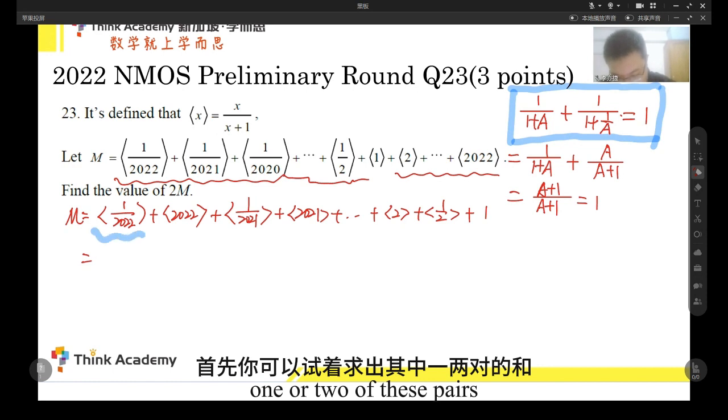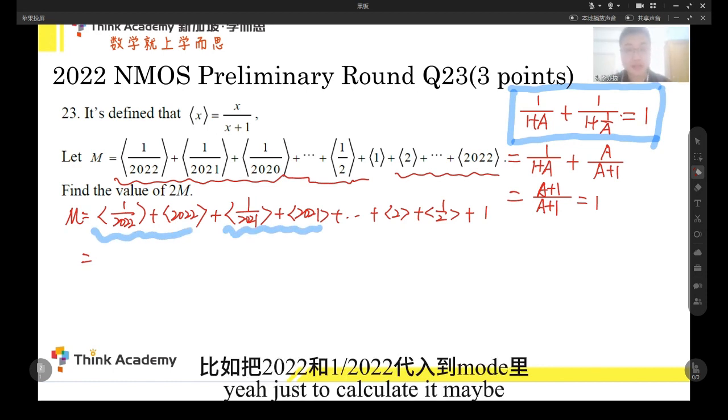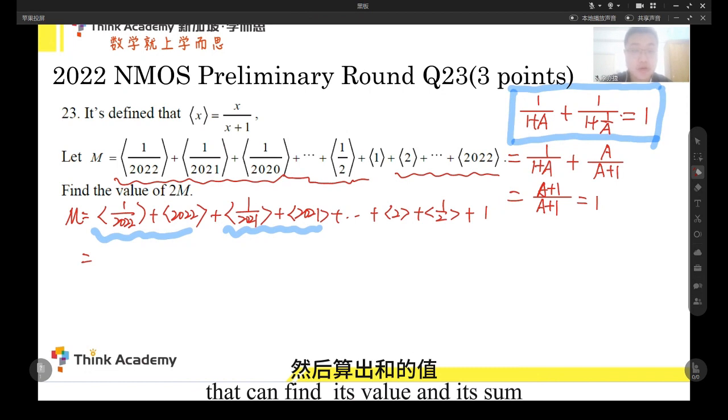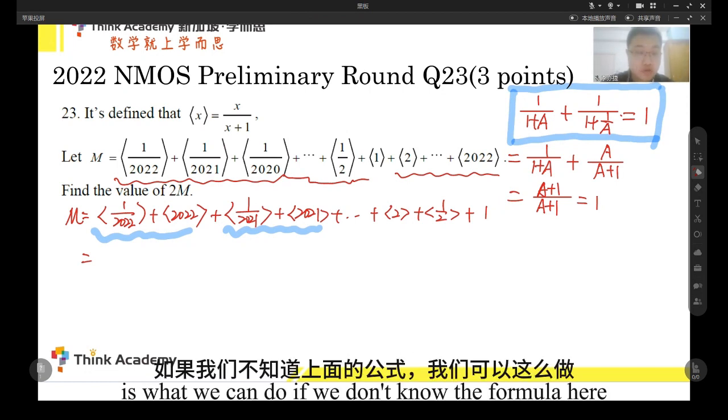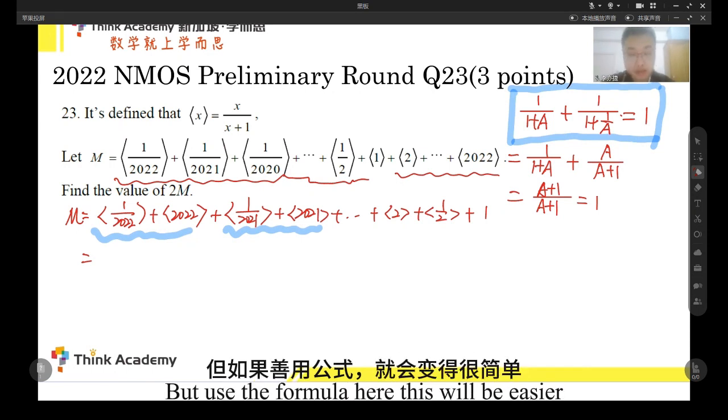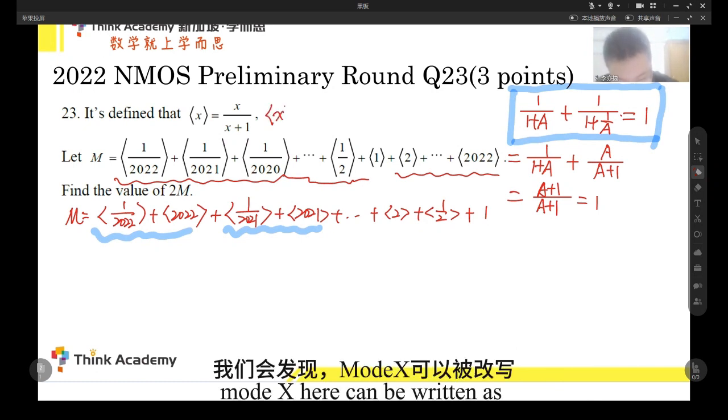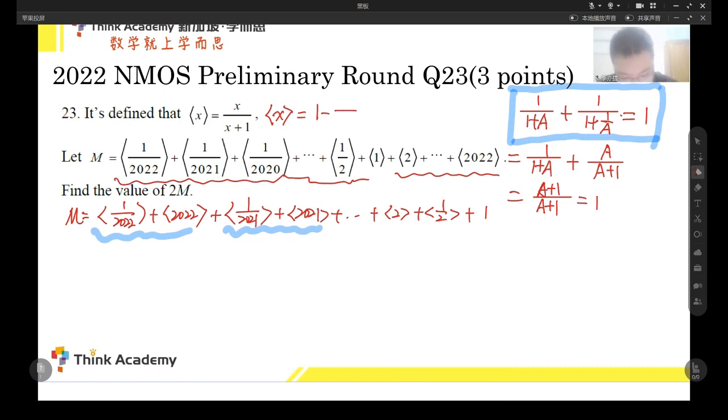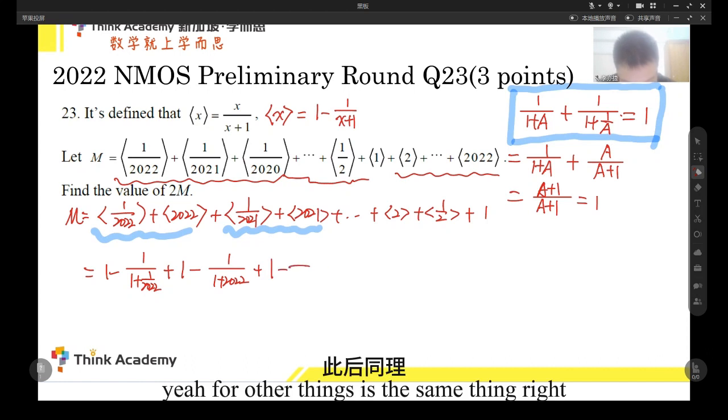So maybe we should put them pair to pair. So each fraction and integer, we can build them together. It is maybe a good way to find the pattern, right? So then there are two ways. First of all, you can calculate one or two of these pairs, just to calculate it. Maybe bring this one and this one to the mode x, and calculate the value and create the sum, right? This is what we can do if we don't know the formula here. Use the formula here, since it will be easier. For, we can see the mode x here can be written as one minus this fraction, right? So, if you put here, it can be written as this fraction. And mode 2022 will be written as this. For other things, it's the same thing, right?